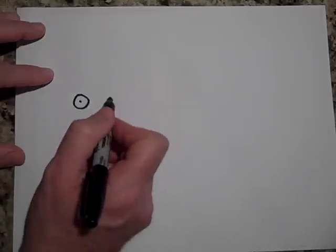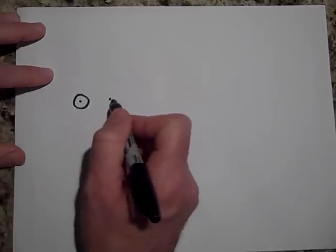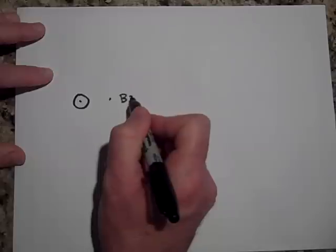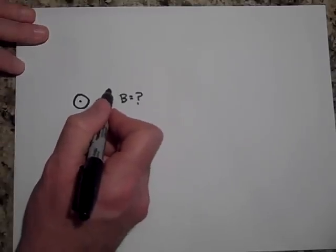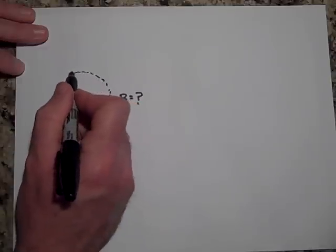So if I want to know the B right here, that's what I'm after - the actual strength of the B right there. Then I'm going to draw an Amperian loop. I'll be a little more careful with this Amperian loop. It's got a radius R.